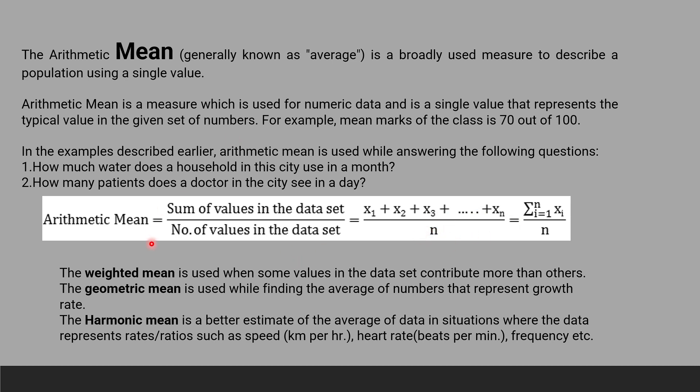There are other types of mean. The weighted mean is used when some values in the data set contribute more than others. The geometric mean is used while finding the average of numbers that represent growth rate. Harmonic mean is a better estimate of the average of data in situations where the data represents rates or ratios like speed per kilometer, heart rates, frequency, etc.